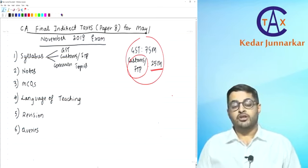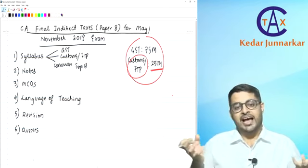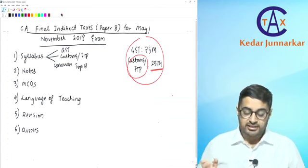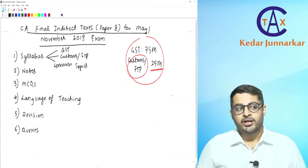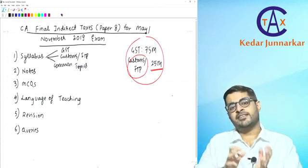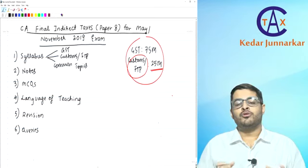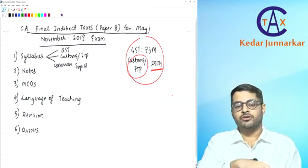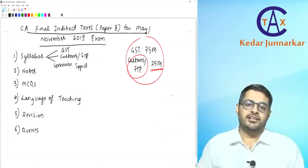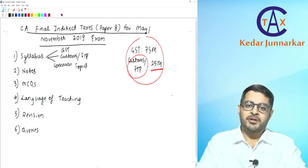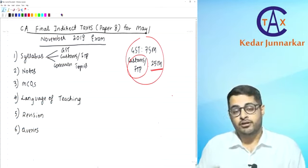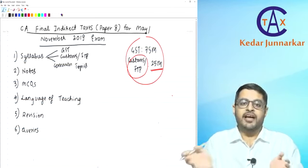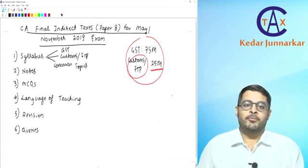The third part is Common Topics. There are certain topics common to both GST and Customs — for example, assessments and appeal procedures exist in both. Instead of studying these provisions separately, we've made a separate part called Common Topics. Every part will have one issue and we will deal with that issue regarding both GST and Customs, first discussing the GST provisions then the Customs provisions, highlighting what is common and what is different.